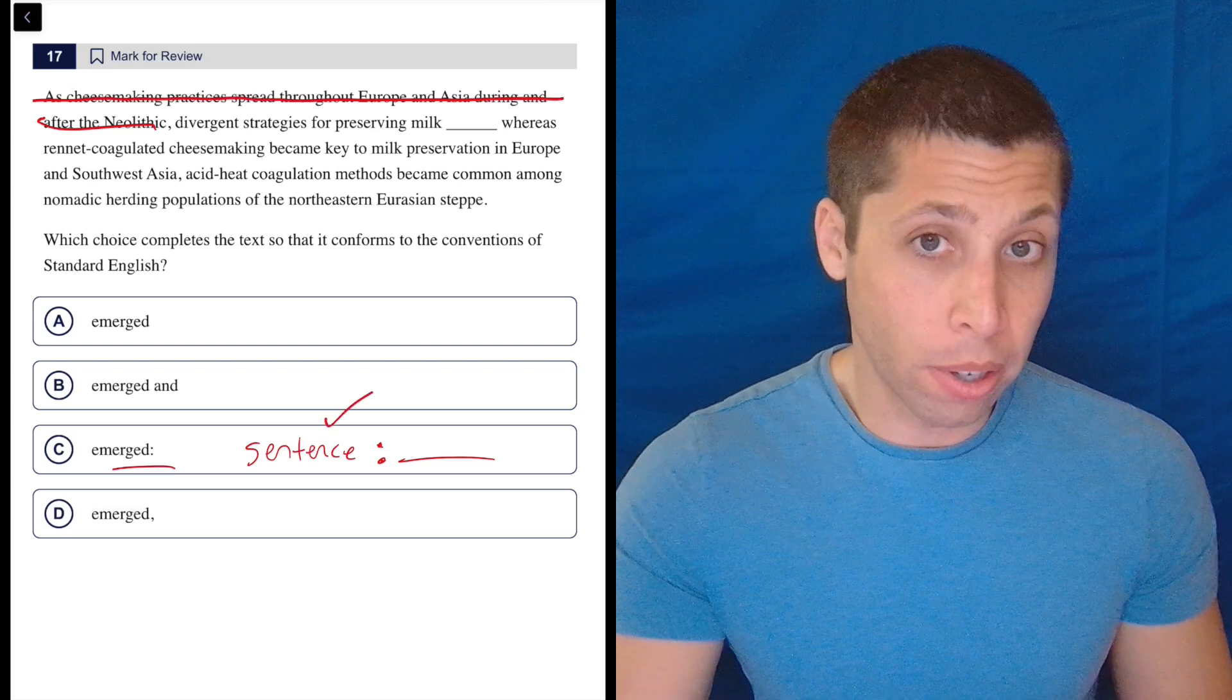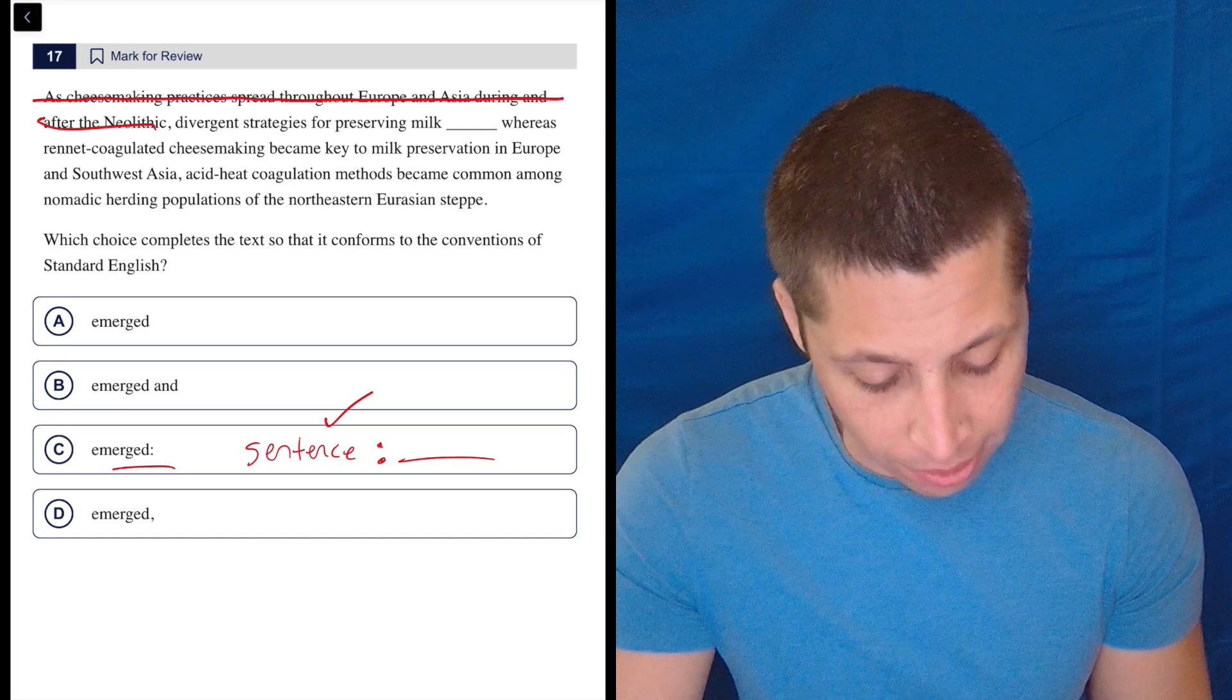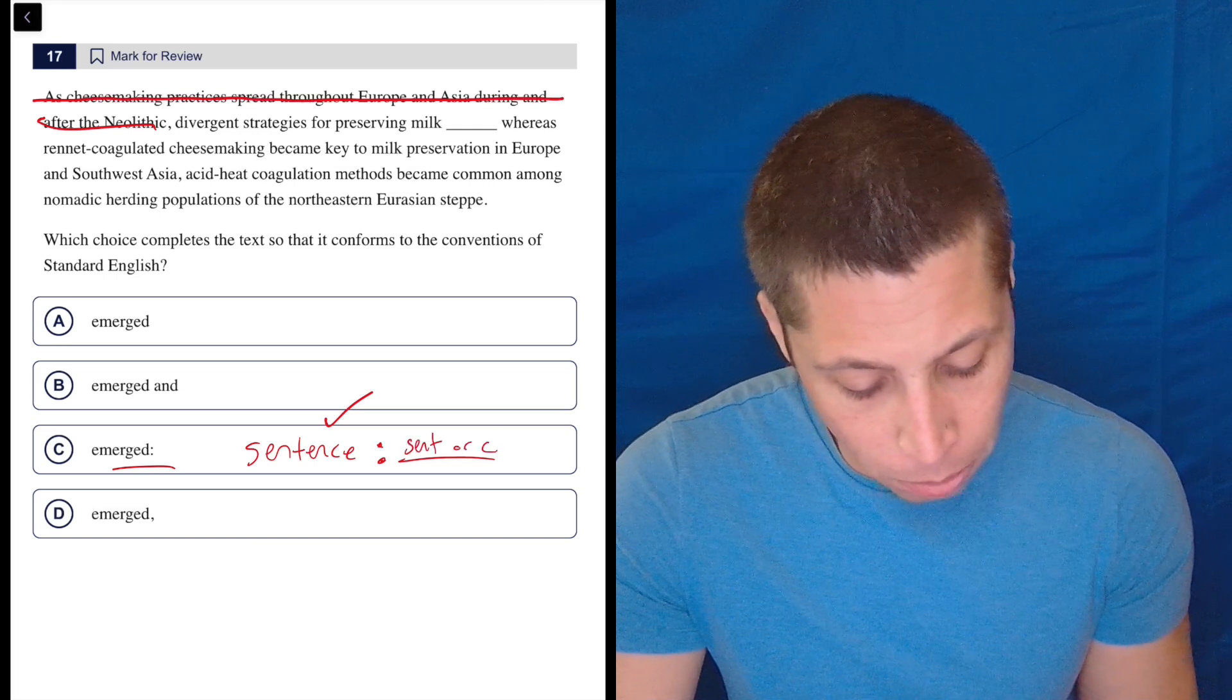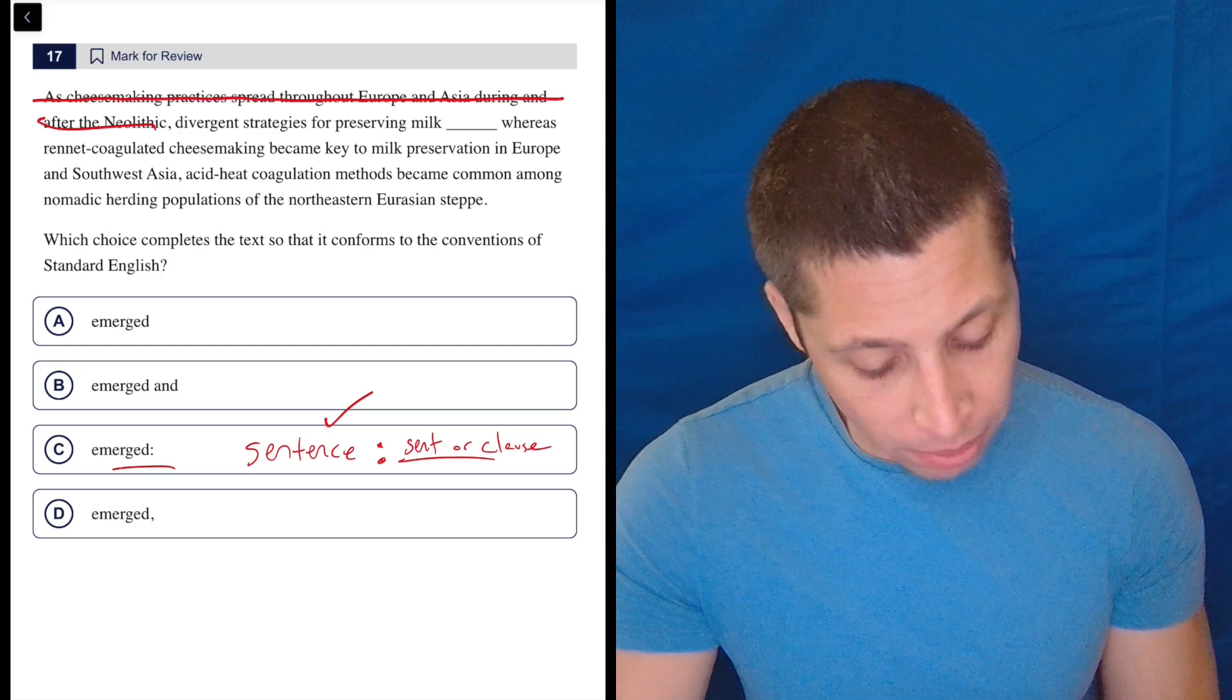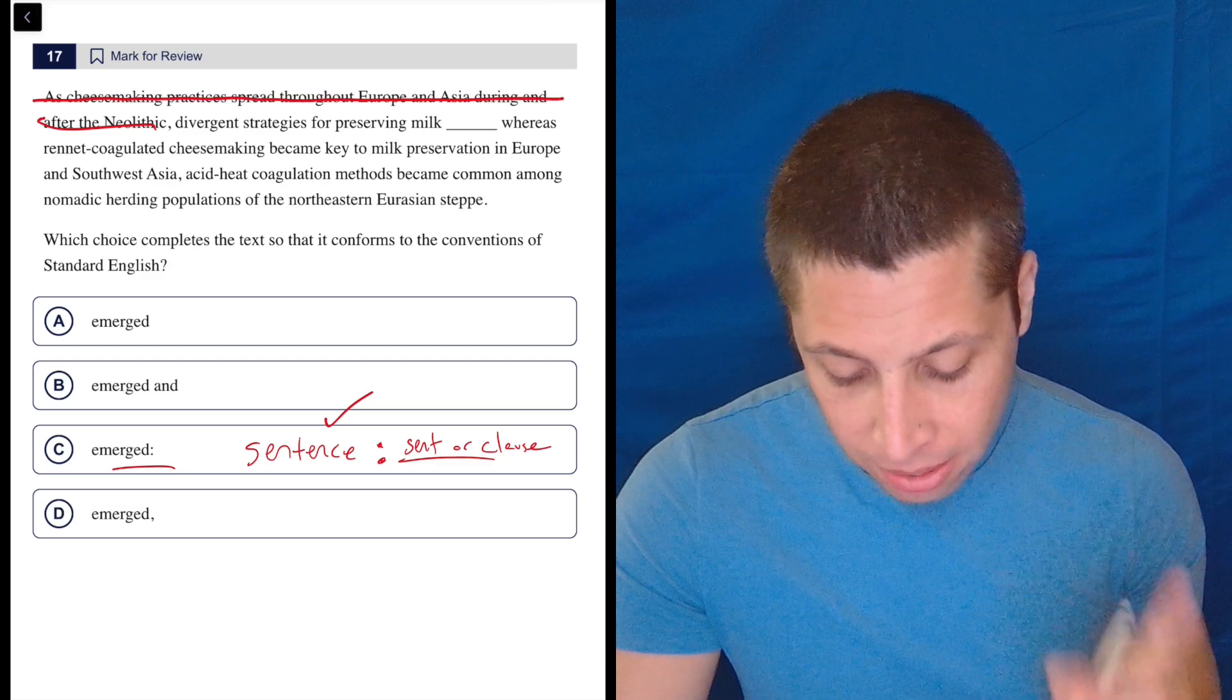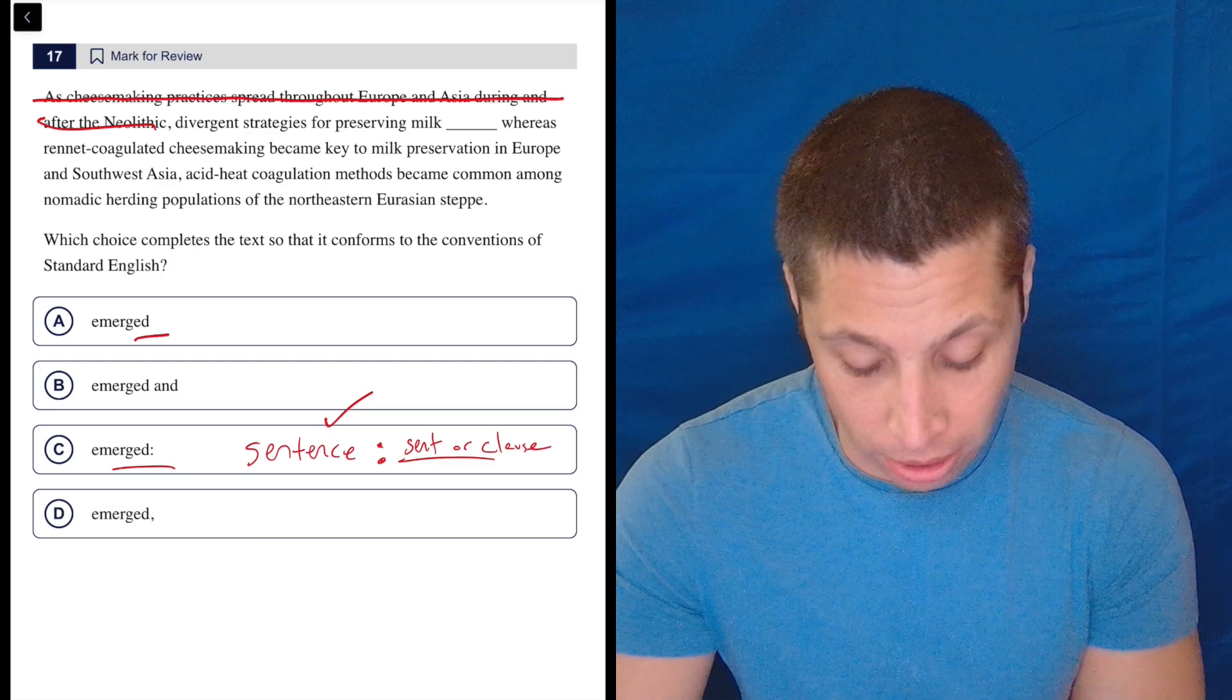Now, I'd still want to know what's going on after because that might affect things. Like I said, this could be a sentence or it could be a clause. But if it is a sentence, then I don't really have a choice. I would have to pick C here because none of these other options allow me to join sentences. We would need some sort of punctuation to connect sentences.